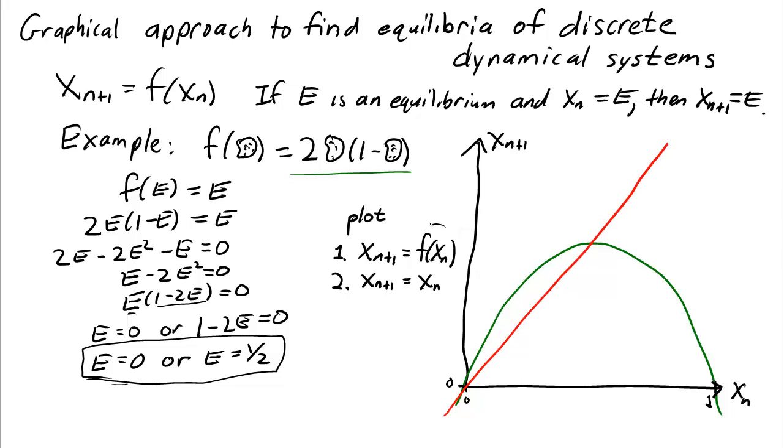The equilibria are the points where f(x_n) = x_n. So on the graph, they can be found by the points where the graph of the function and the diagonal line meet.